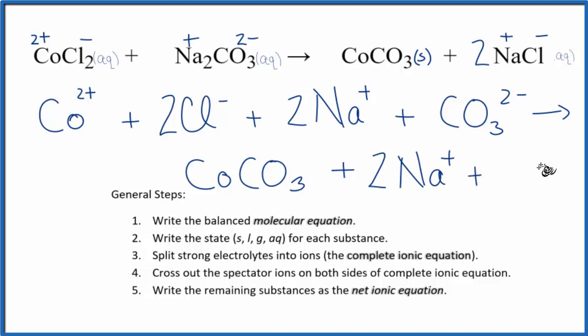So we have 2 plus the chloride ion, and the 2 applies to everything, so we have 2 chloride ions. At this point, we have the complete ionic equation.